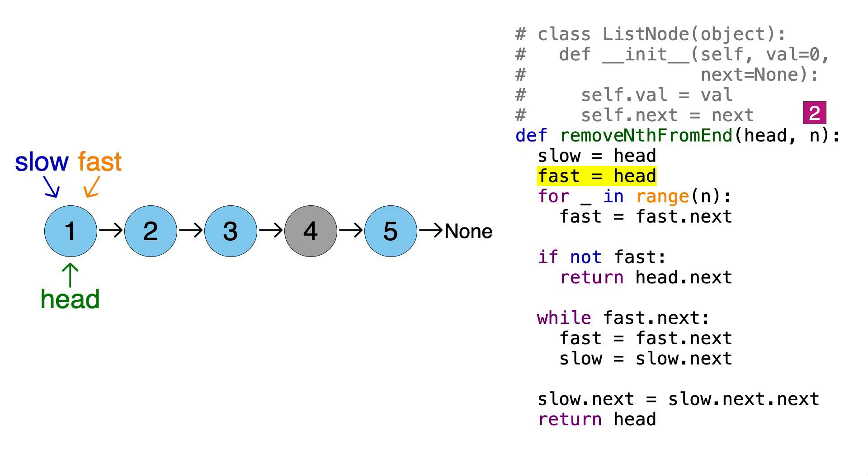We then need to give the fast node a head start, so let's enter this loop, and remember, n equals 2. So let's move up the fast pointer by setting fast equal to fast.next, and then we'll do it a second time. Now this next line here is a check that's required for an edge case, when n is equal to the number of nodes in the linked list, and I'll do an example later showing why this is necessary. But right now, since fast points to a node, this condition is false, and we'll skip it.